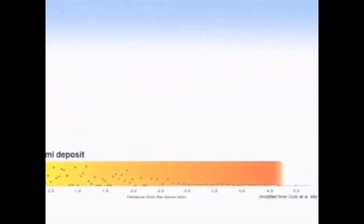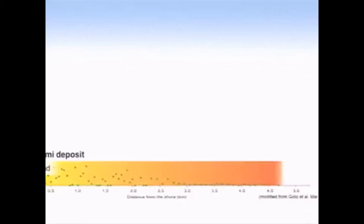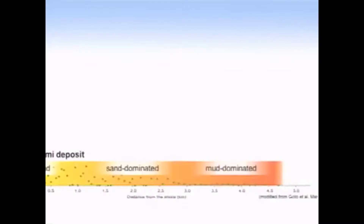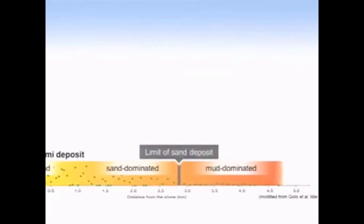The tsunami deposited a layer that was not very thick. It ranged in thickness from about 30 centimeters near the coast to about 1 or 2 millimeters at around 5 kilometers inland. The deposit was first just sand, then further inland it was sand-dominated with some mud, and further inland it was just mud-dominated. The limit of the recognizable sand deposit — about 5 millimeters thick — was 2.8 kilometers inland.